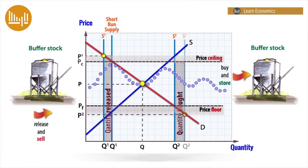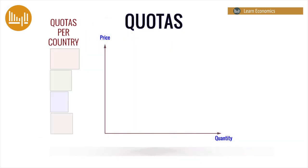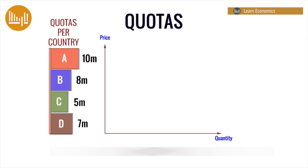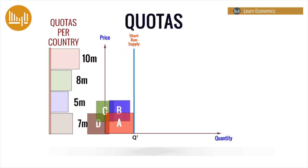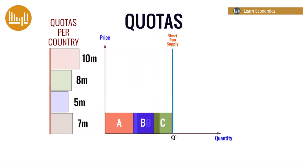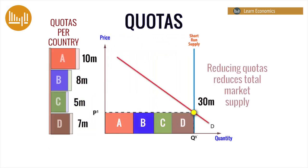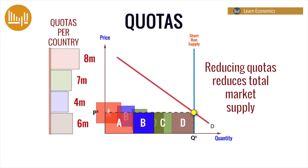Establishing price ceilings and floors, as well as using buffer stocks, are just two ways of stabilising agricultural markets. In some cases, buffer stock schemes are inappropriate, especially when storage is difficult or expensive. Agreeing production quotas is another way of preventing surpluses and collapsing prices. Producers are given a quota which determines total supply — reducing quotas will reduce supply, preventing collapsing prices.